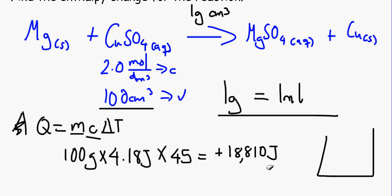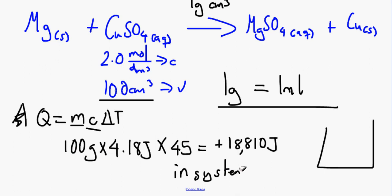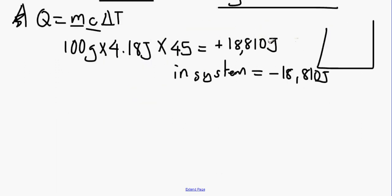The temperature rose from 20°C to 65°C, requiring 18,810 joules. That means in the system it has lost 18,810 joules, so in the system the energy equals minus 18,810 joules. Always remember your signs when it comes to enthalpy.